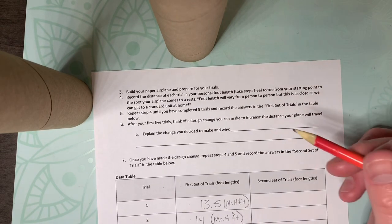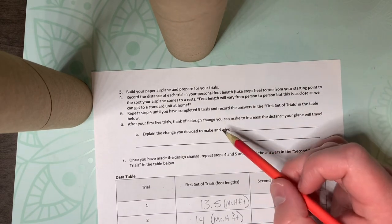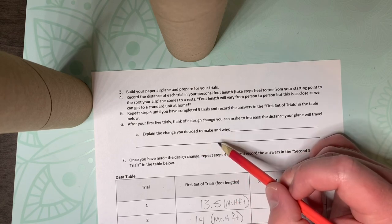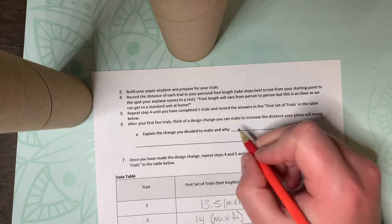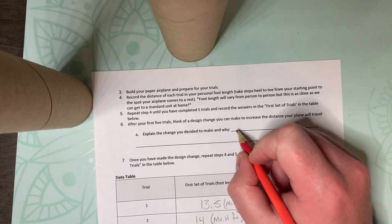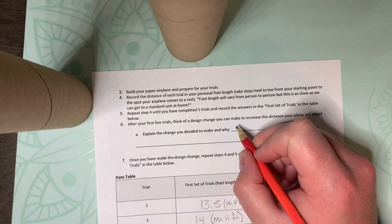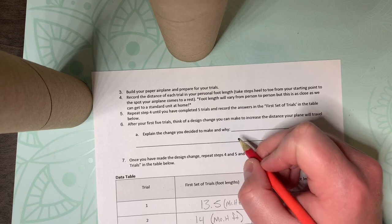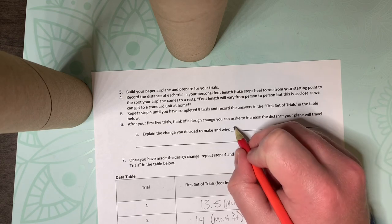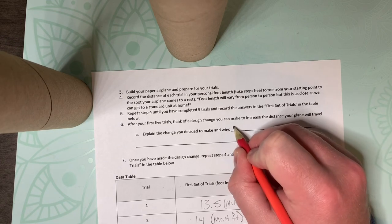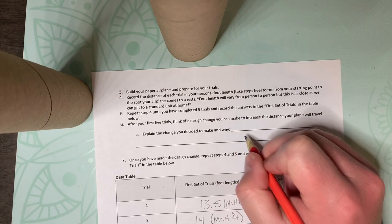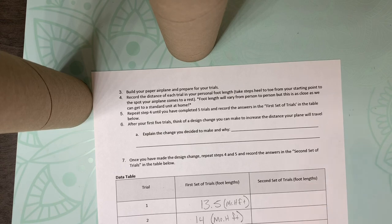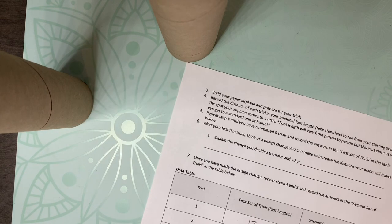The next part is where you come in handy. So you're going to explain the change you make and why. So for mine, I am changing the wings to be shorter. I want to see if that will help with airspeed and maybe get me some more distance. So I would write in here of why I'm doing that and what my thoughts are on that. Record your second set of trials and then do the mean for those as well.